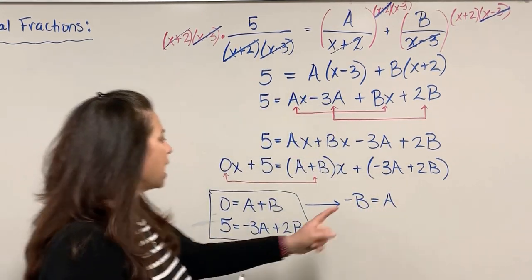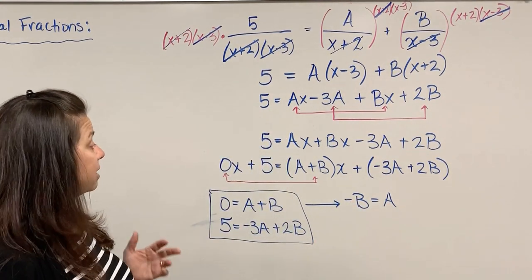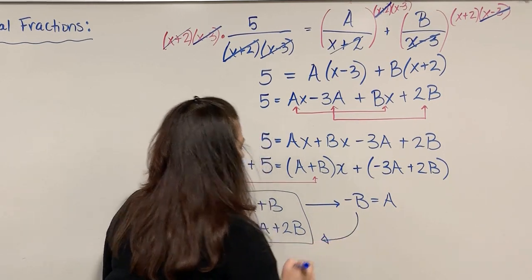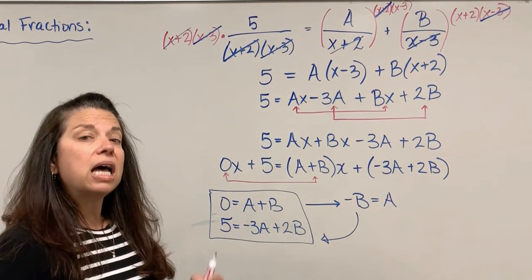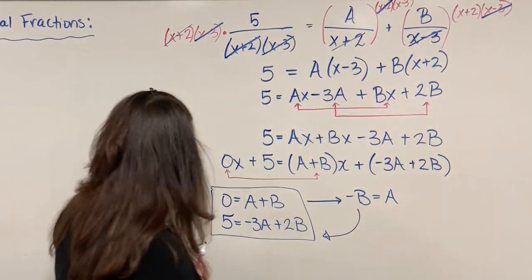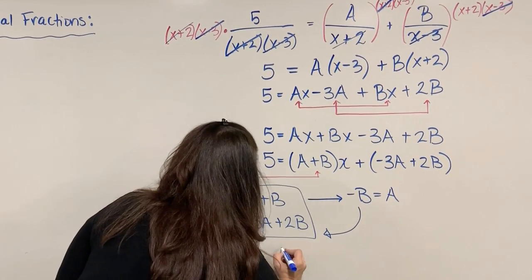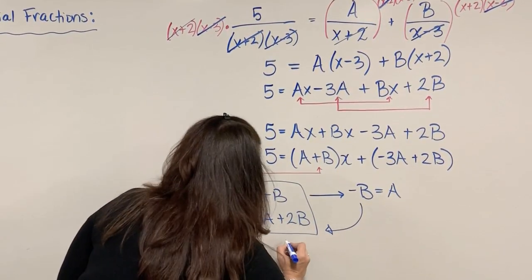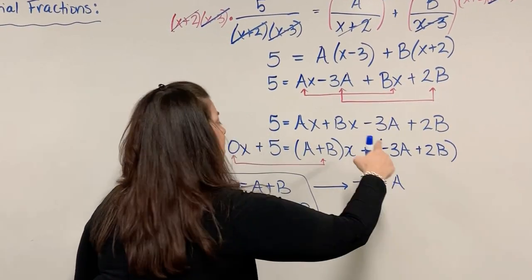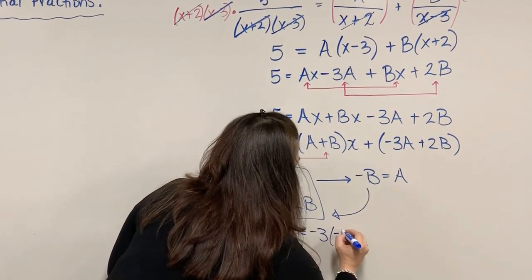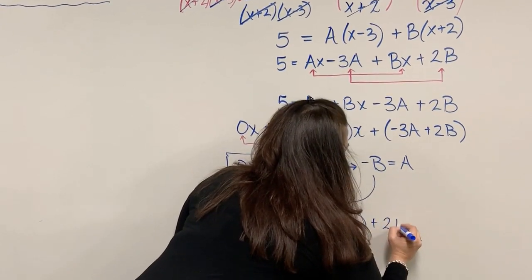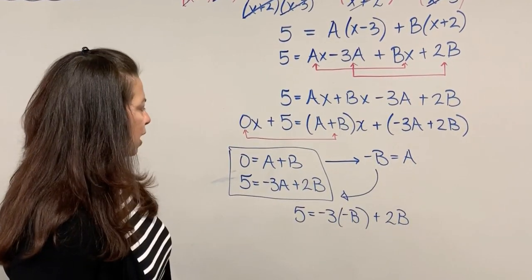At least I have now a relationship between A and B. A is -B. I can now go to my second equation and plug in what I know A to be, the -B. So when I handle that, I can write my equation as 5 = -3(-B) + 2B.